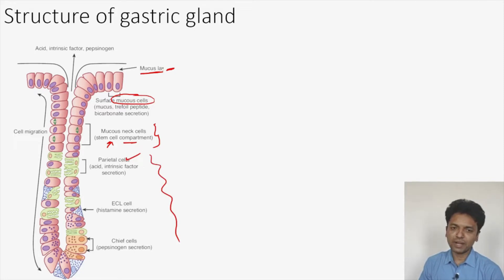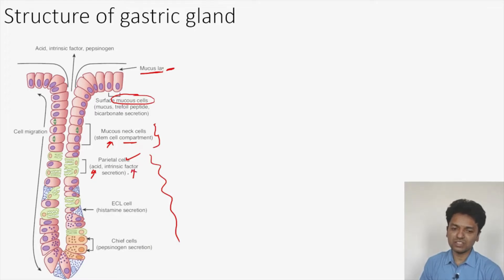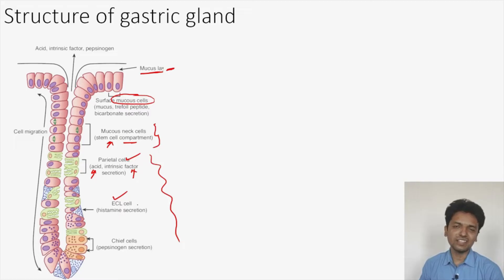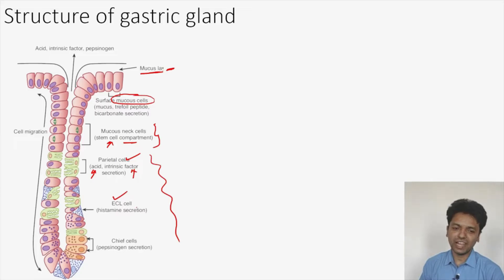Then we have three very important cells. The first is the parietal cell, which has two important functions: it helps in the secretion of HCL, and it also helps in the secretion of the intrinsic factor. This intrinsic factor is very important for the absorption of vitamin B12. The second cell is the ECL cell — the enterochromaffin-like cell — which secretes histamine.